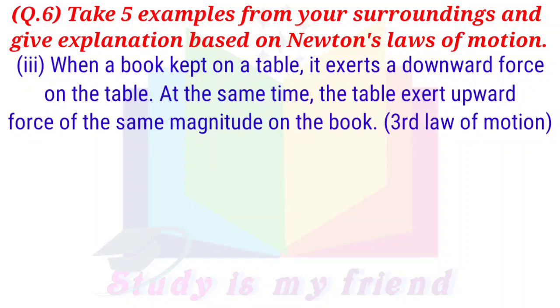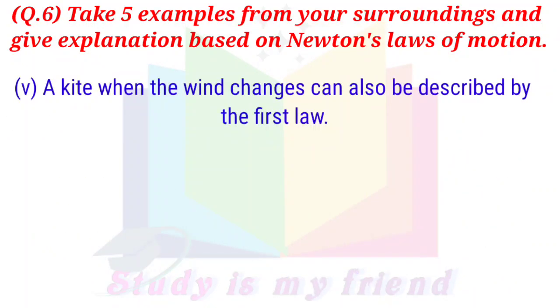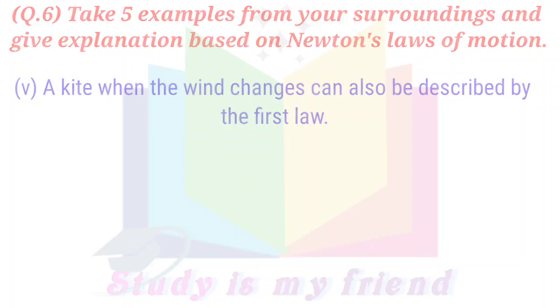When a book kept on a table, it exerts a downward force on the table. At the same time, the table exerts upward force of the same magnitude on the book. When you ride your bicycle, your bicycle is the mass. Your leg muscles pushing on the pedals of your bicycle is the force. When you push on the pedals, your bicycle accelerates. You are increasing the speed of the bicycle by applying force to the pedals. A kite when the wind changes can also be described by the first law.